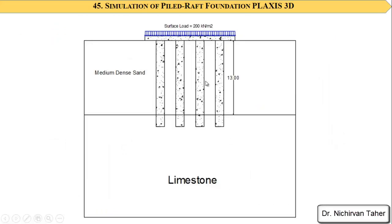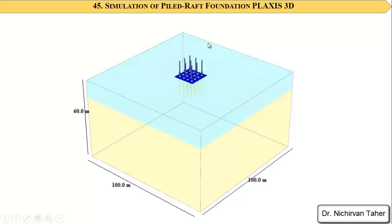We will have two soil layers. The first soil layer, 13 meters thick, is medium dense sand. The bottom soil layer is a strong layer of limestone. We will apply 200 kilonewtons per square meter to the mat foundation as a surface load. The soil geometry will use boundary conditions of 100 meters by 100 meters.